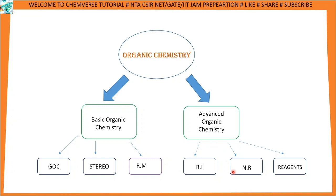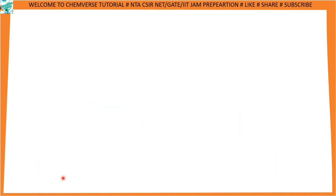In the advanced part, reactive intermediates, name reactions, and reagents are covered. Most questions come from the advanced organic chemistry part. I have already uploaded some videos in the reagent and name reaction playlist. In this series, we focus on basic organic chemistry first because these three chapters are the basic pillars of organic chemistry. In order to understand the advanced part properly, you need to cover this basic part first.